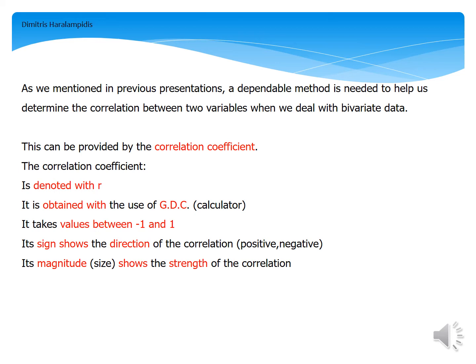The correlation coefficient takes values between -1 and 1. Its sign, whether positive or negative, shows the direction of the correlation between our two variables. And lastly, its magnitude, in other words its size, shows the strength of the correlation.